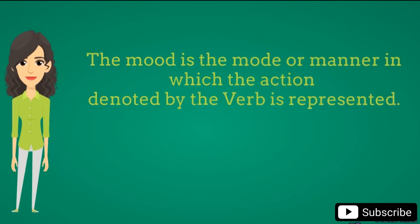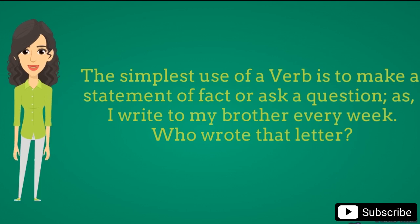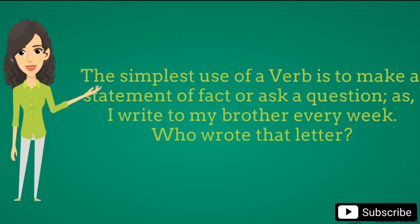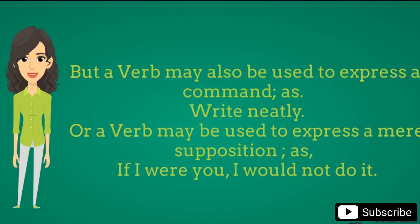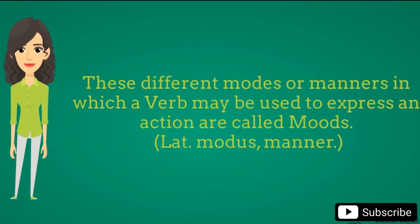Mood. Mood is the mode or manner in which the action denoted by the verb is represented. The simplest use of a verb is to make a statement of fact or ask a question, as: I write to my brother every week; who wrote that letter? But a verb may also be used to express a command, as: write neatly. Or a verb may be used to express a mere supposition, as: if I were you, I would not do it. These different modes or manners in which a verb may be used to express an action are called moods — from Latin modus, meaning manner.